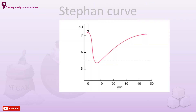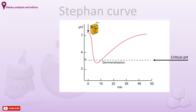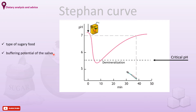This is a Stephan curve, showing the pH drop that occurs after a sugary drink is consumed, shown by the arrow. The dashed line indicates the critical pH below which demineralisation will occur. Hence the advice to wait about 30 minutes to an hour after a meal before brushing your teeth, so that the oral pH will be back to normal and the chance of damaging enamel at low pH is reduced. The shape of the curve is affected by factors including the type of sugary food, the buffering potential of the saliva, and foods or drinks ingested after the sugary challenge.